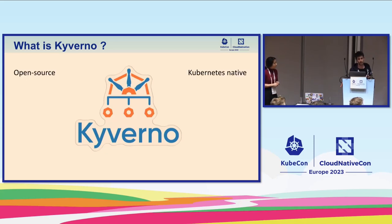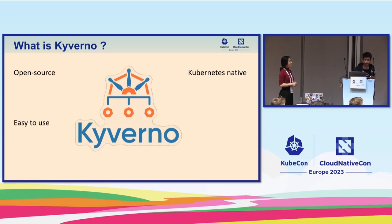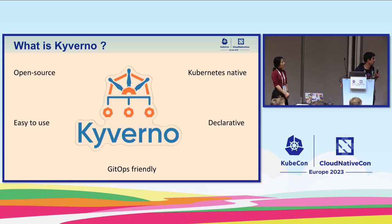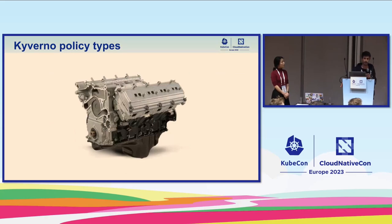Kyverno is an open source Kubernetes-native policy engine. It allows you to create, validate, and enforce policies for a cluster. The advantage of Kyverno is that it doesn't require any specific programming language to create policies, so it's generally considered very easy to use. All policies are completely declarative and created from standard YAML syntax, meaning they can easily be managed and version-controlled like any other code, making Kyverno a very GitOps-friendly tool.